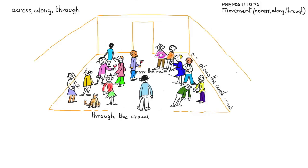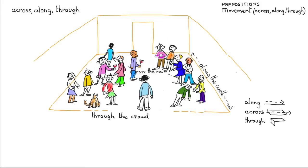Now I'd like to do a diagram just to show that idea again. So here's along, which is like following a line. And here's across, which is going from one side to the other of a surface. And finally through, which is like into the middle of something and out the other side.